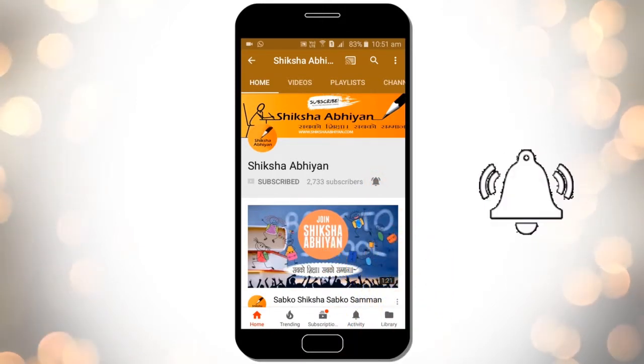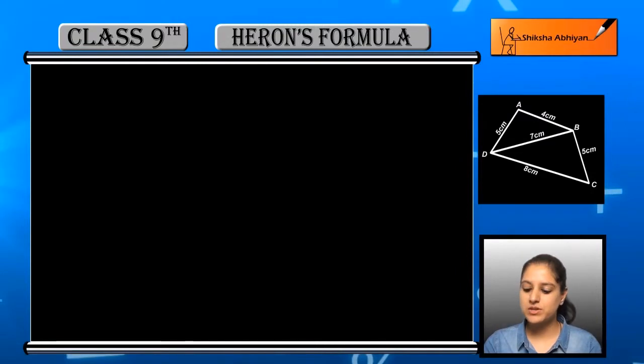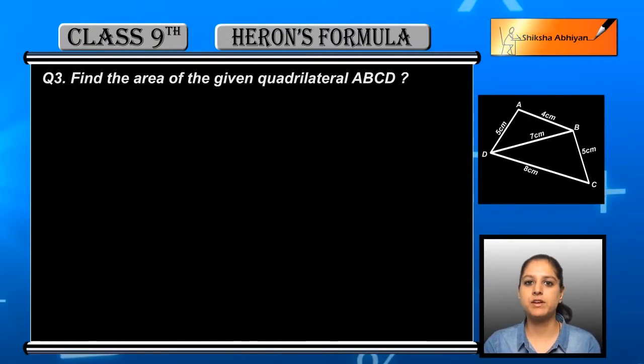Now the next question is find the area of the given quadrilateral ABCD. A quadrilateral is given with all sides and a diagonal values provided. We need to find the area of this quadrilateral. Let us see how.